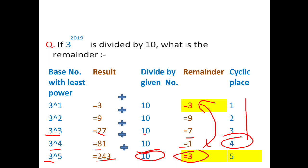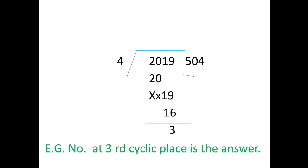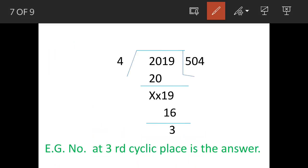What we will do is divide 2019 with 4. When we do this division, we get final remainder 3. Now 3 is the cyclic place which will indicate the answer.